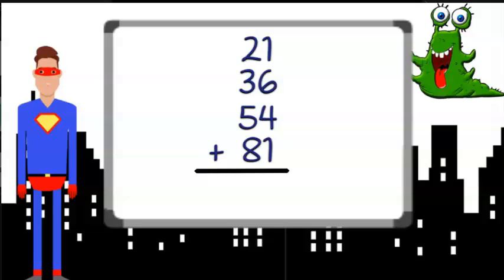If we add up all the ones place digits, we get 1 plus 6 plus 4 plus 1, which gives us 12. Well, 12 is made up of 1 ten and 2 ones. So let's put the 2 ones in the ones place and regroup the 10 ones into 1 ten in the tens place.